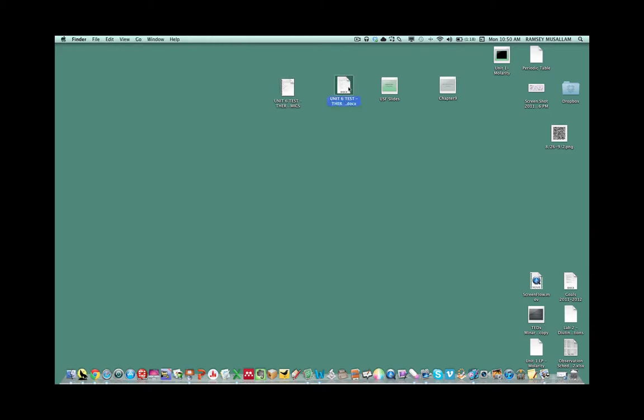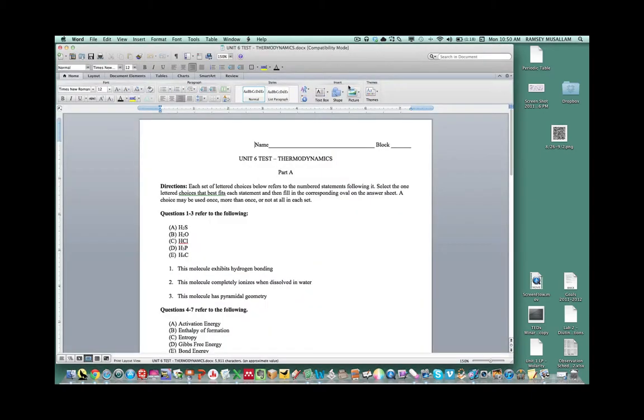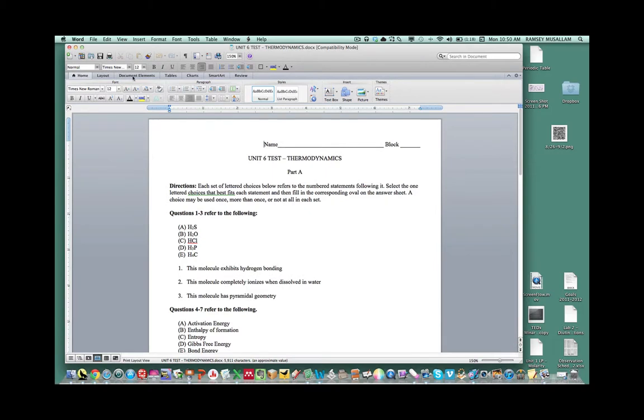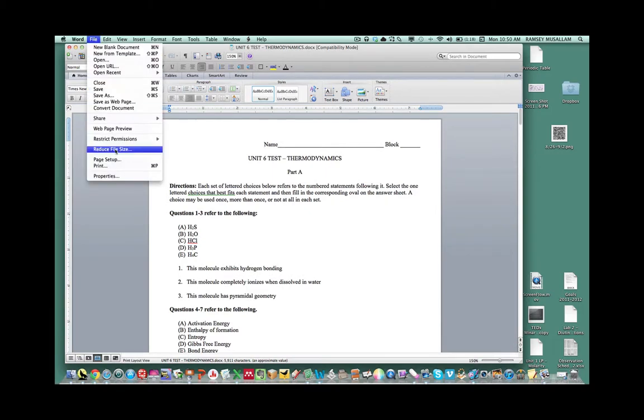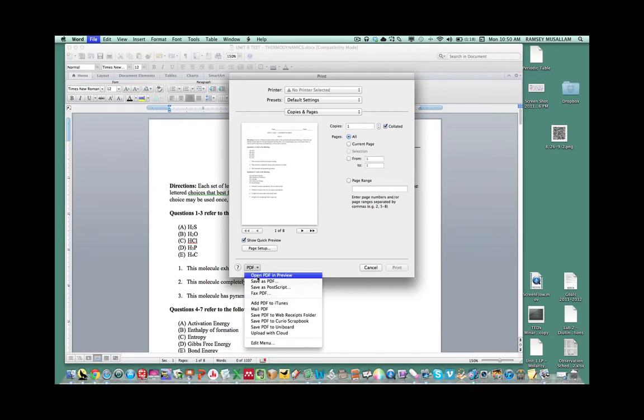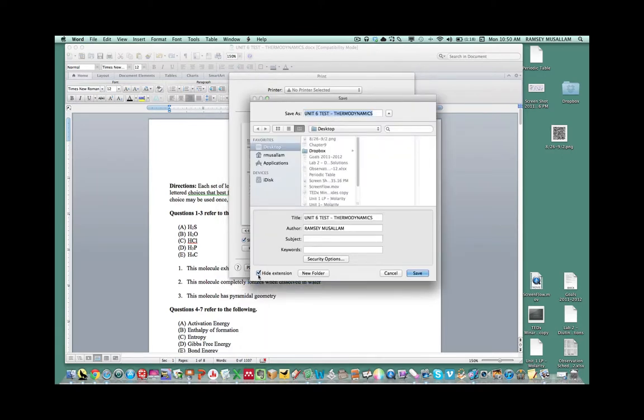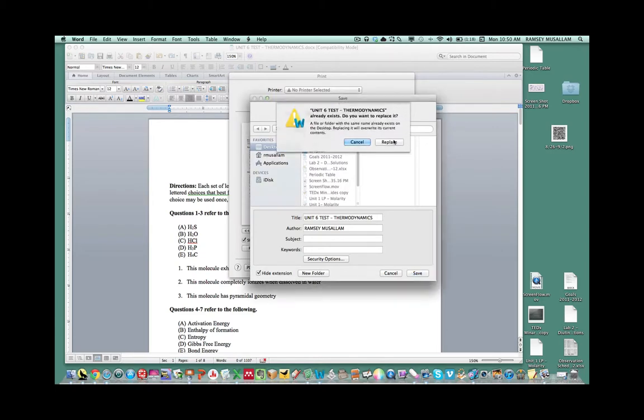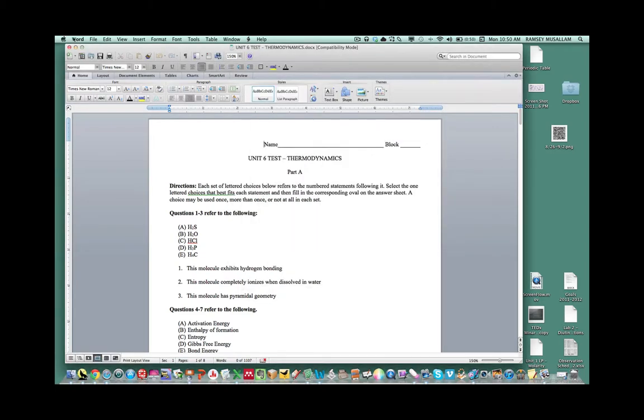The first thing you need to do is take your Word document and go up here to file and hit the print button. You're going to save it as a PDF. Click save as PDF and we're going to throw that right onto the desktop.